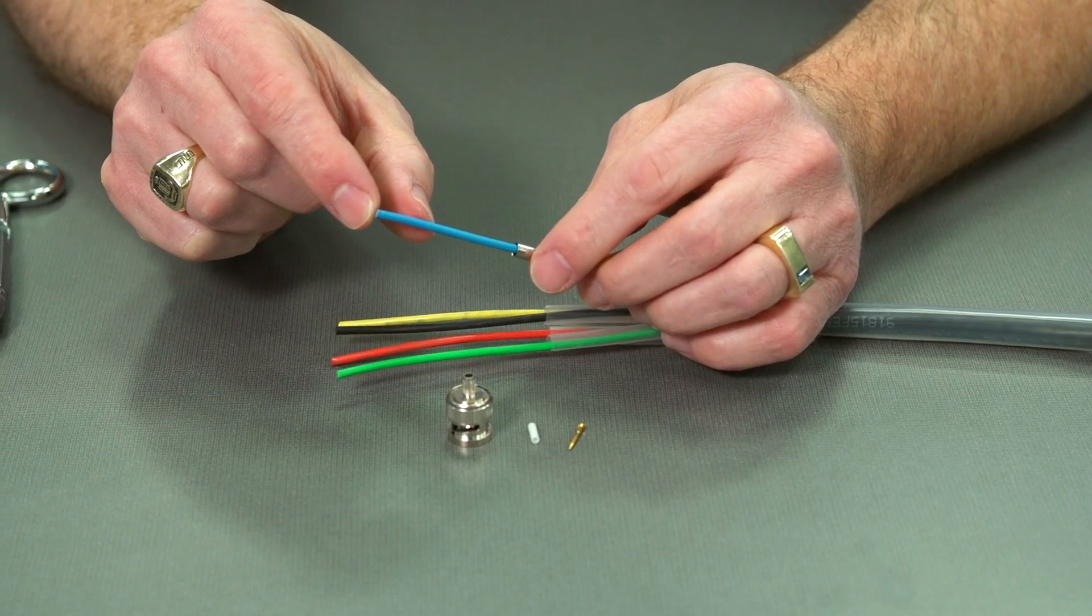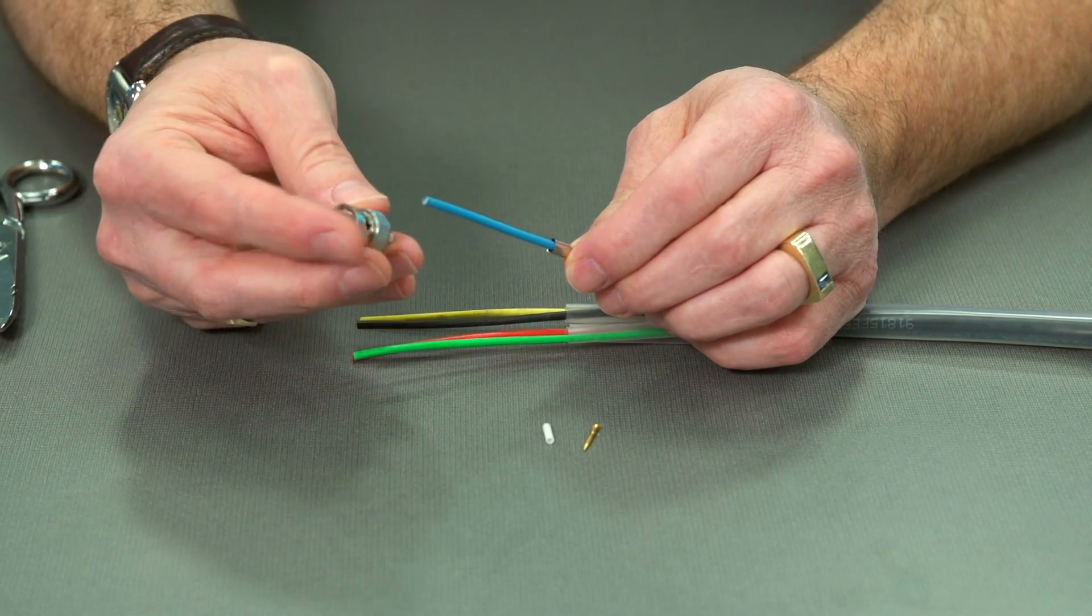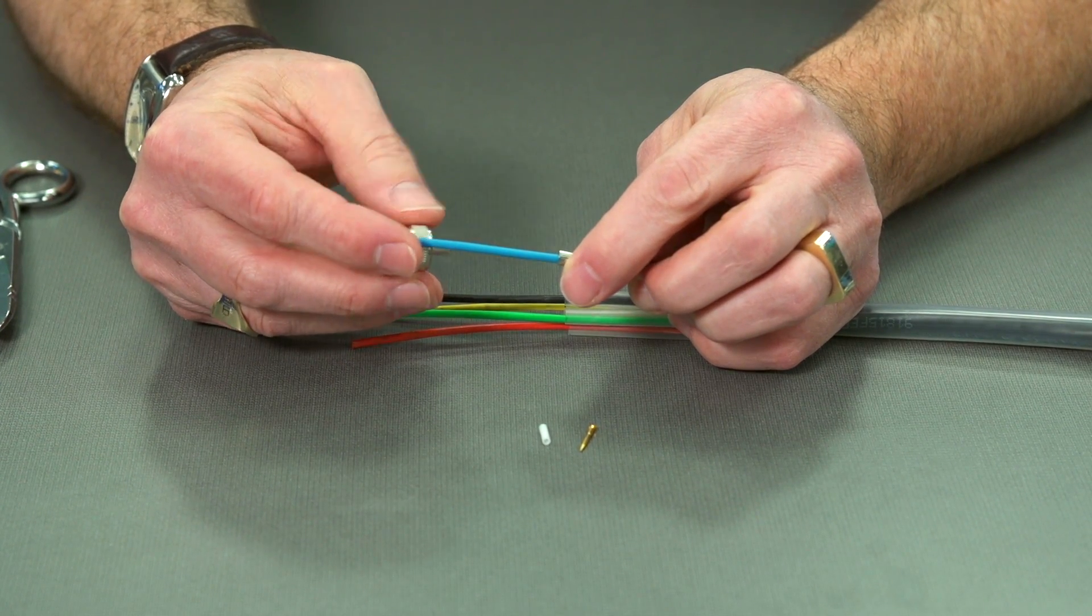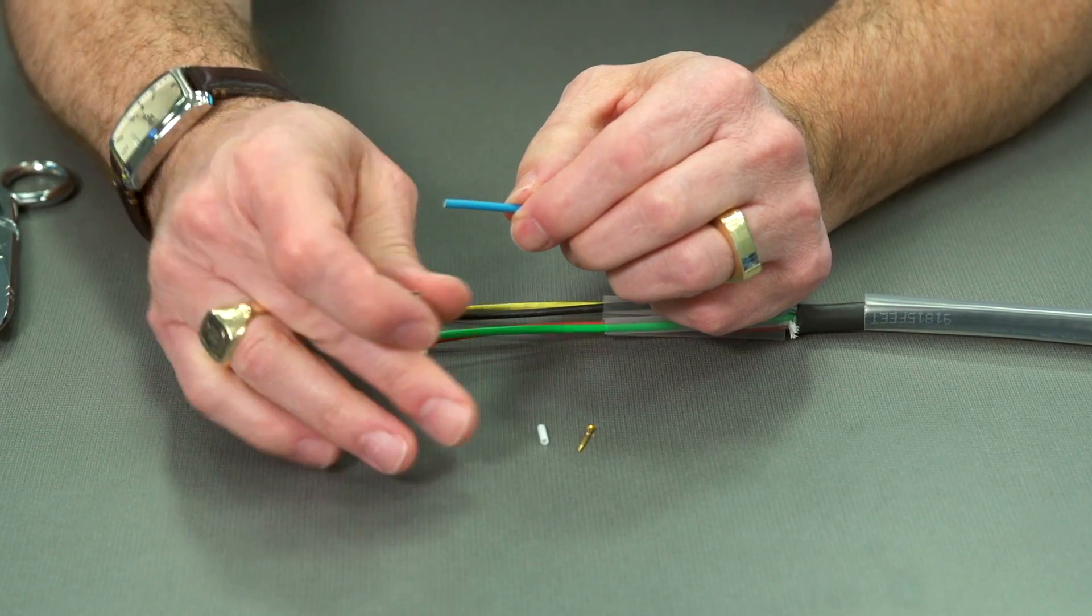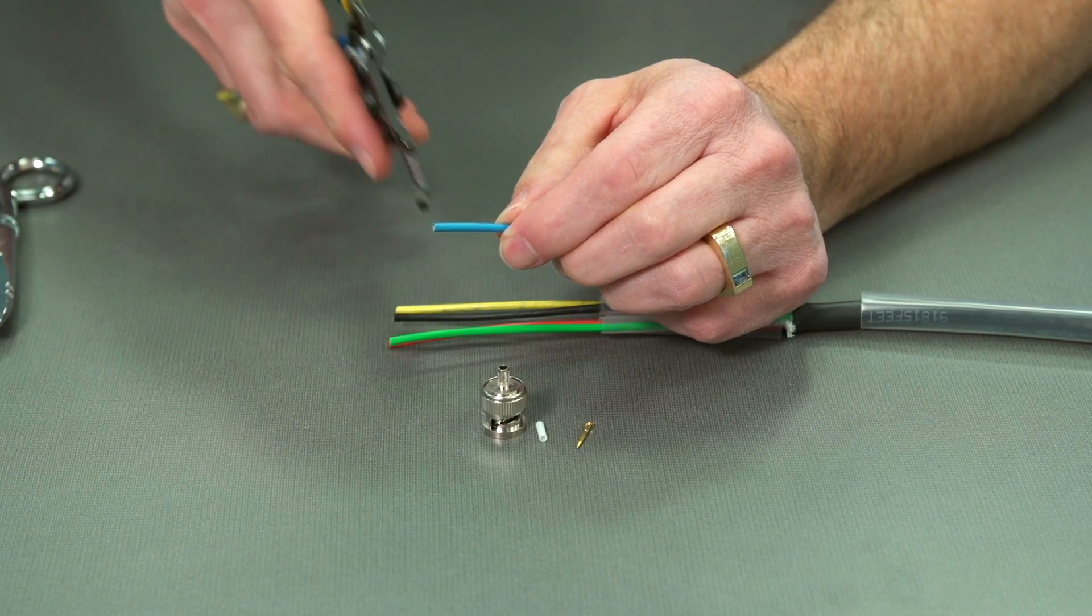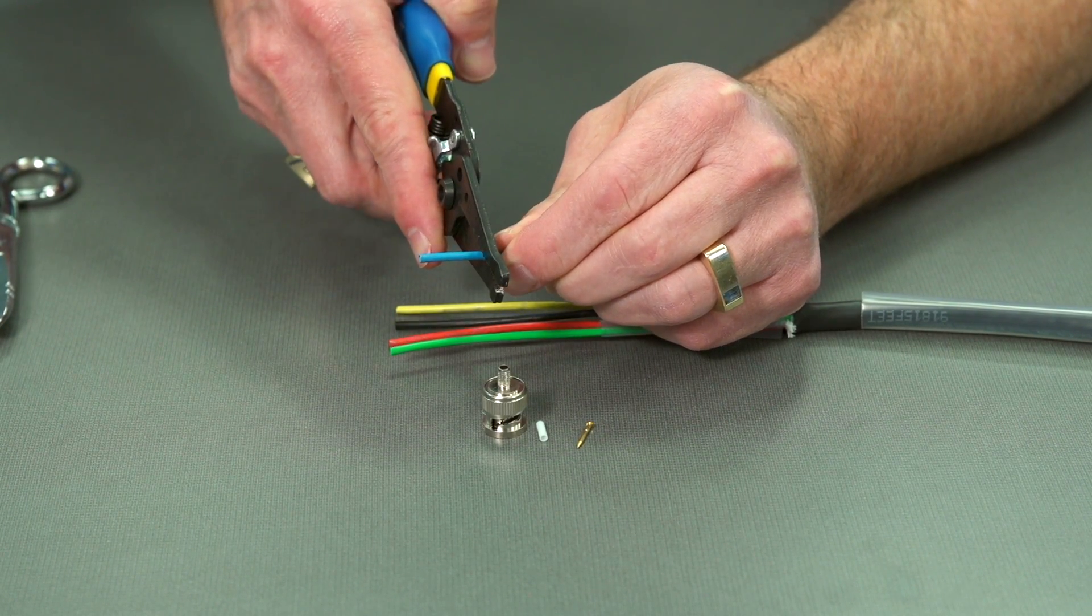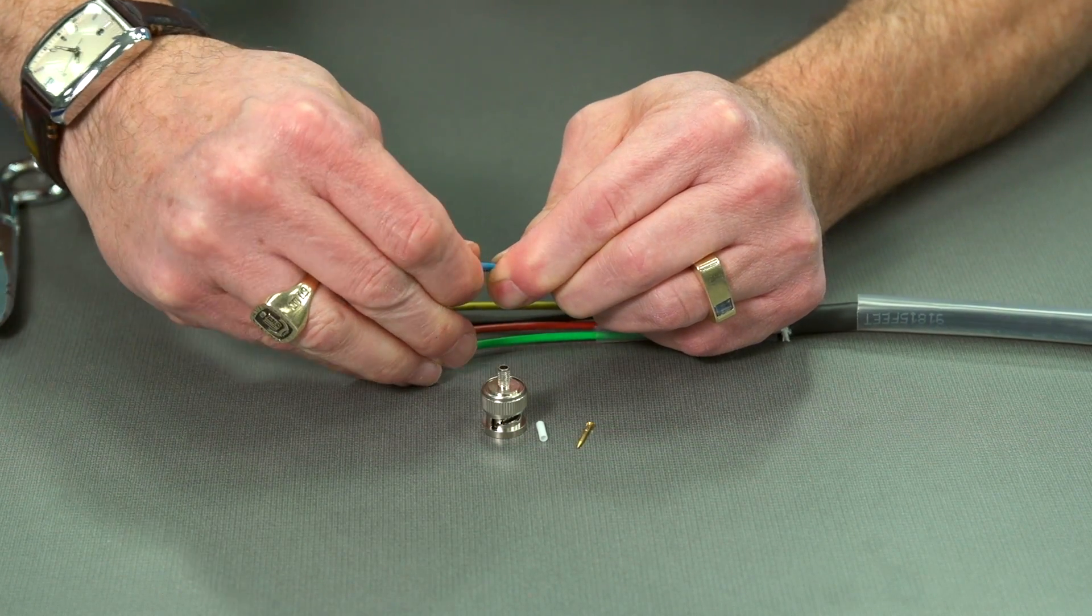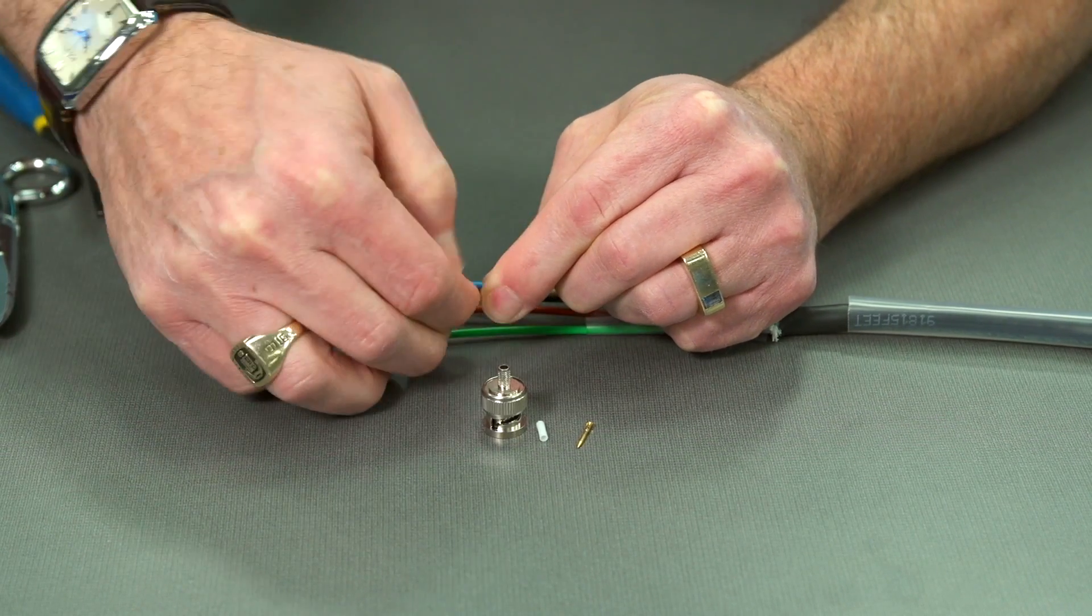So now we need to strip back this cable. How far do I need to strip it? Well, it needs to come out about this long, so I'm going to strip it about here. I'm going to use the stripper, and all I do is come down and squeeze once, and then I should be able to pull this off.